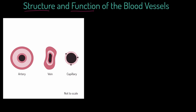Arteries — in terms of their structure, they have a thick smooth muscle layer. We can identify that on the image: this is a layer of smooth muscle here, and that muscle can constrict inwards to force the lumen — this bit in the middle — to get smaller. Of course, it can also dilate or relax and allow that lumen to become bigger. That's what that thick smooth muscle layer does.